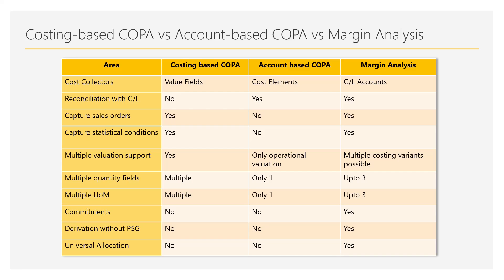SAP is now targeting margin analysis without an operating concern or profitability segment — meaning you would not need to create an operating concern in the future. This is not yet live, but the concept is that in the GL field status group itself, you could define certain characteristics. When posting a transaction to a GL account, the system would automatically derive values for those characteristics without needing a profitability segment or operating concern.